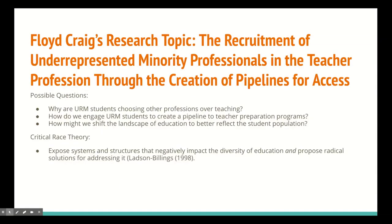My research topic is the recruitment of underrepresented minority professionals in the teacher profession through the creation of pipelines for access. The possible questions that I have: why are URM students choosing other professions over teaching? How do we engage URM students to create a pipeline to teacher preparation programs? How might we shift the landscape of education to better reflect the student population? I'll be using critical race theory to expose systems and structures that negatively impact the diversity of education and propose radical solutions for addressing issues.